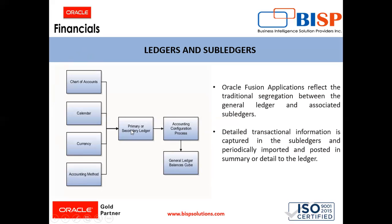We can say a primary ledger contains four Cs: the chart of accounts, calendar, currency and accounting convention or the accounting method.